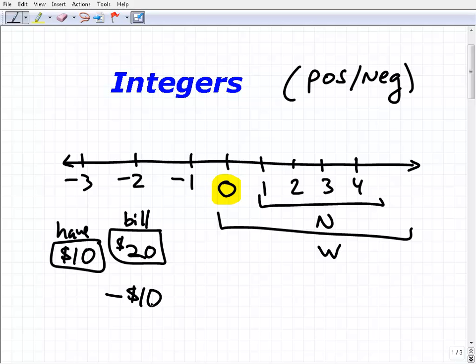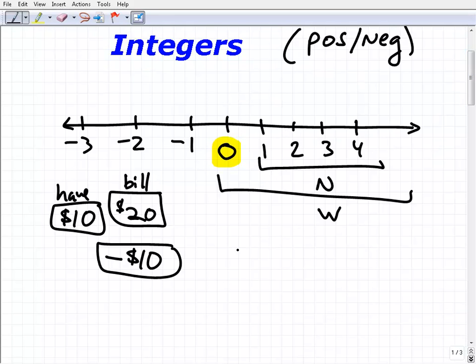That means you have a value that we just can't describe with a regular whole number or natural number. You're in debt ten dollars. So people figured out we have a need for numbers that are less than zero.